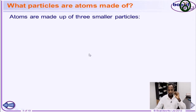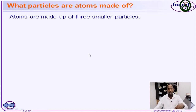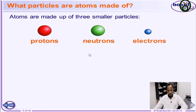In the days of old, during Dalton's atomic theory, and Democritus and all those who have contributed to the science of discovery of the atom, they said an atom was an indivisible particle. But today we found that an atom can be divided into three subatomic particles. The atom is made up of three smaller particles: the protons, the neutrons, and the electrons.